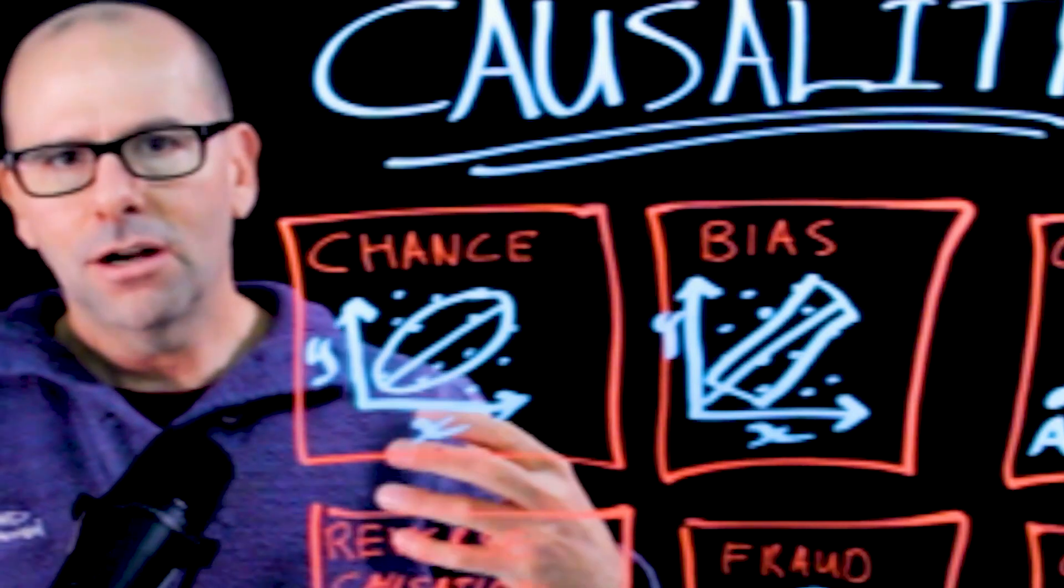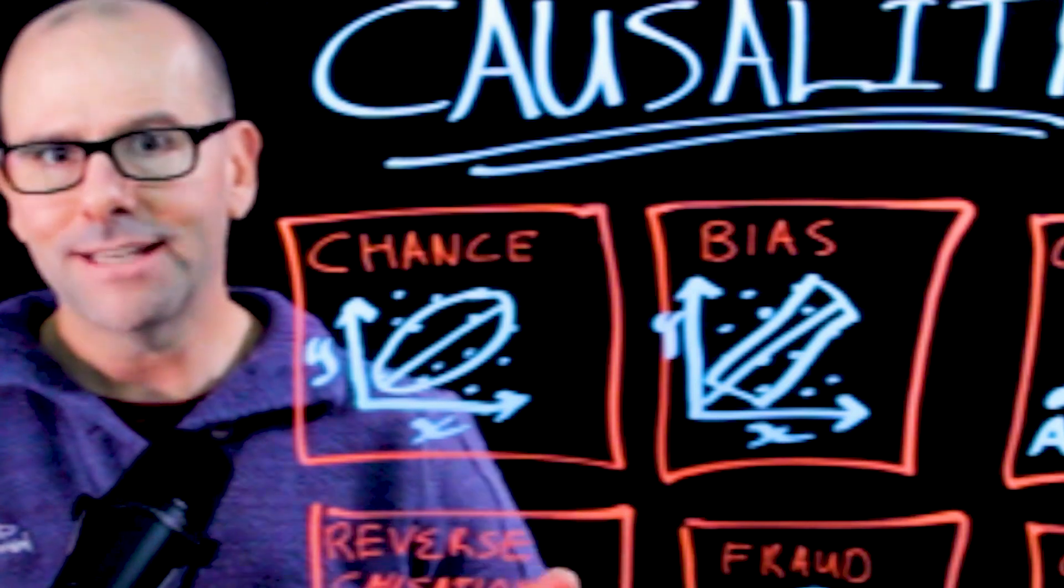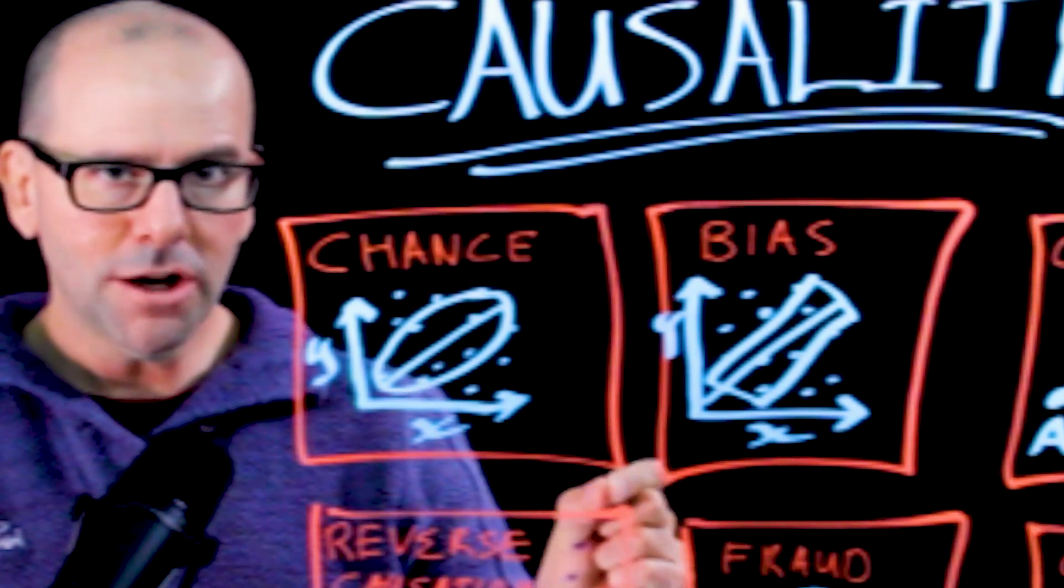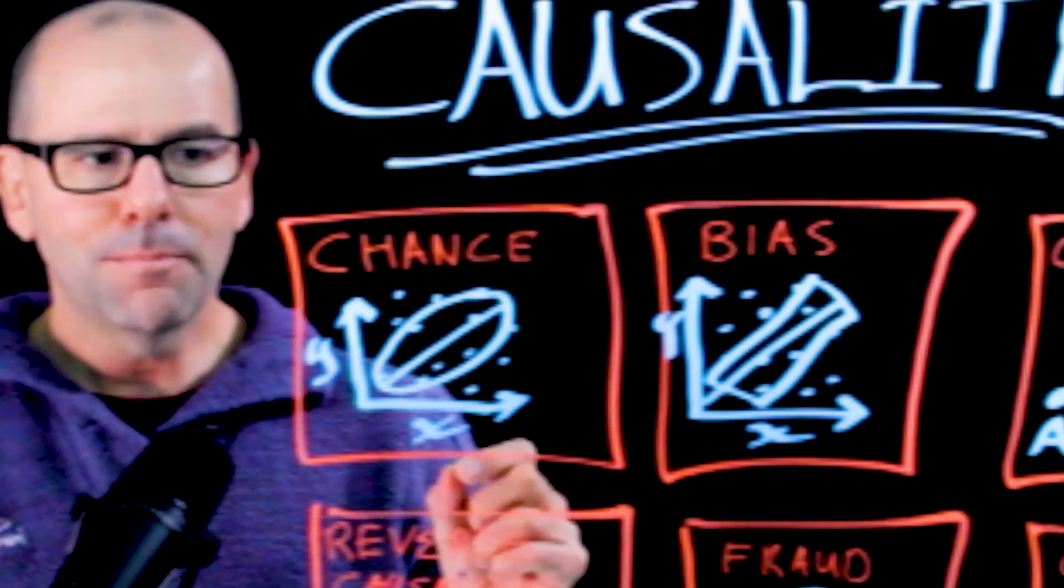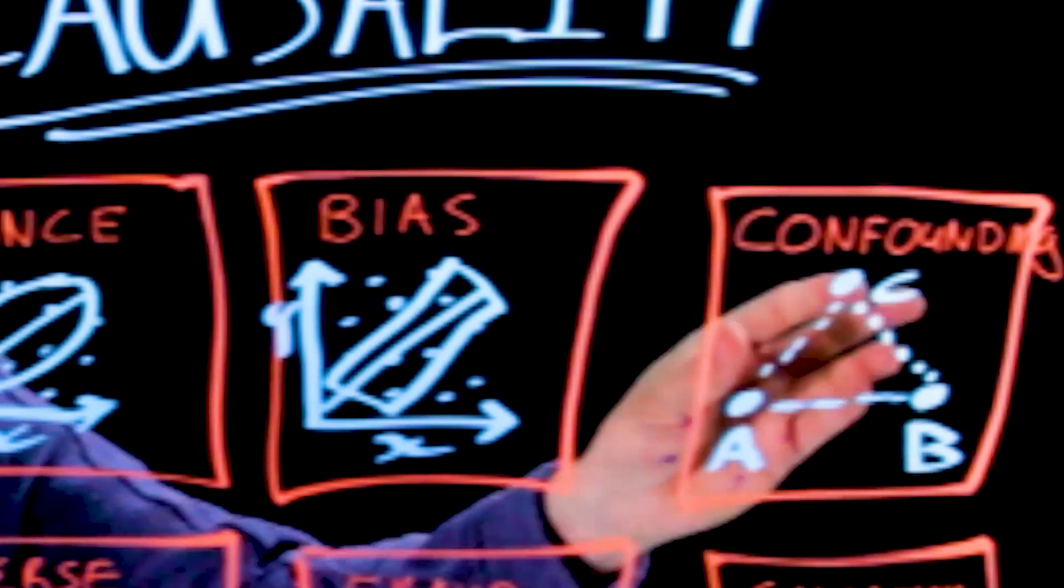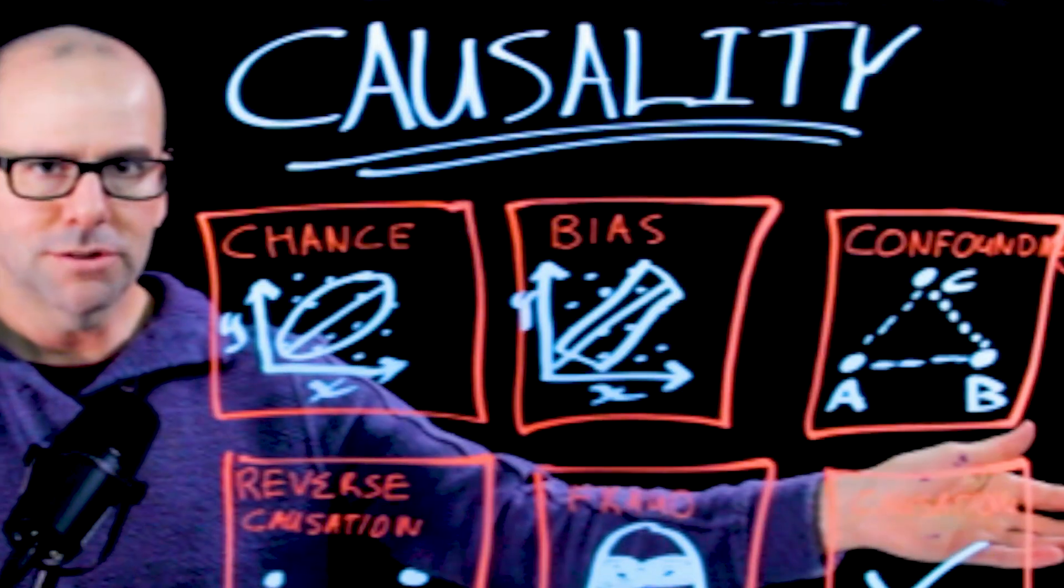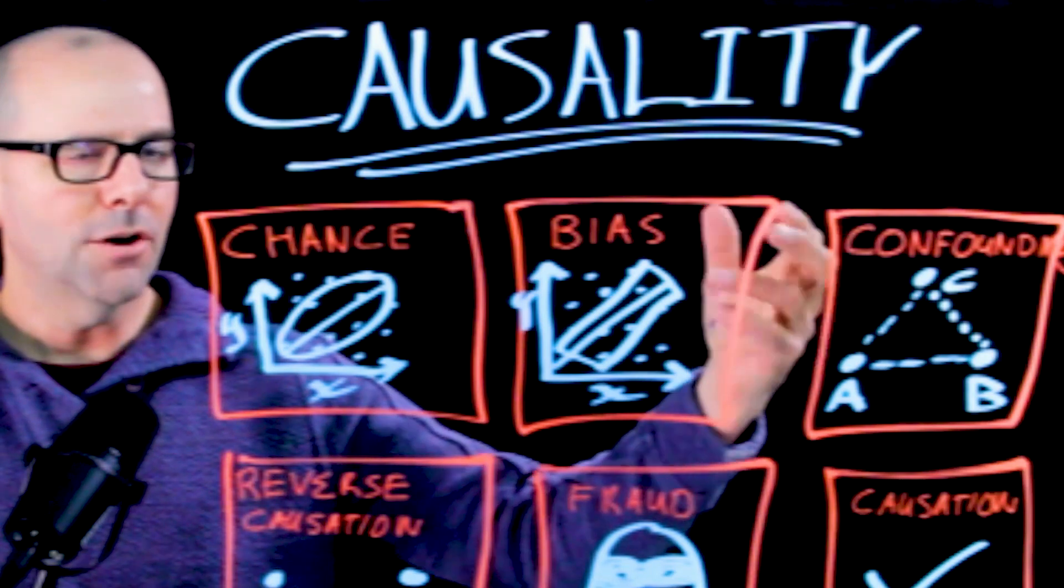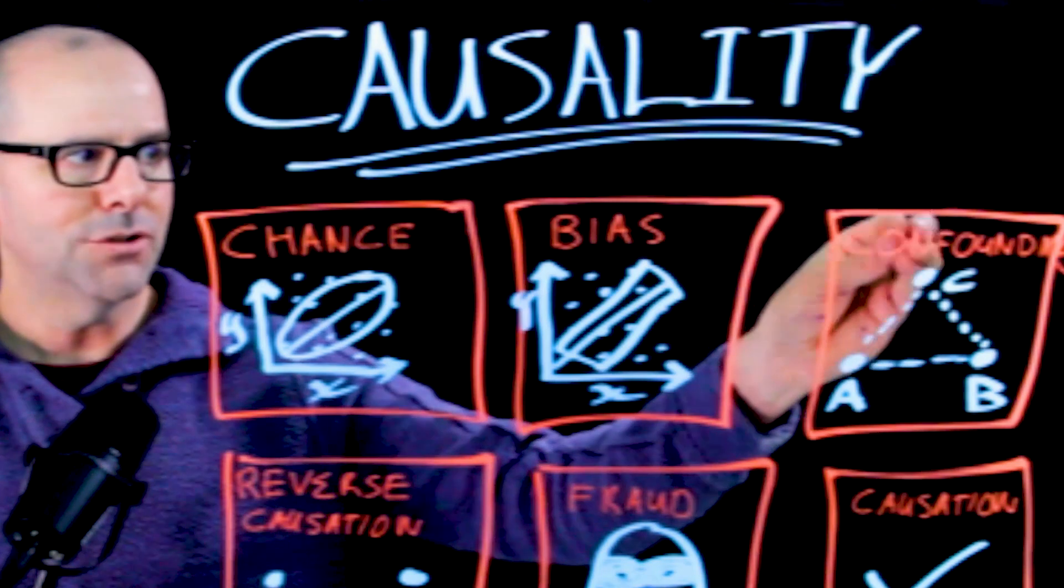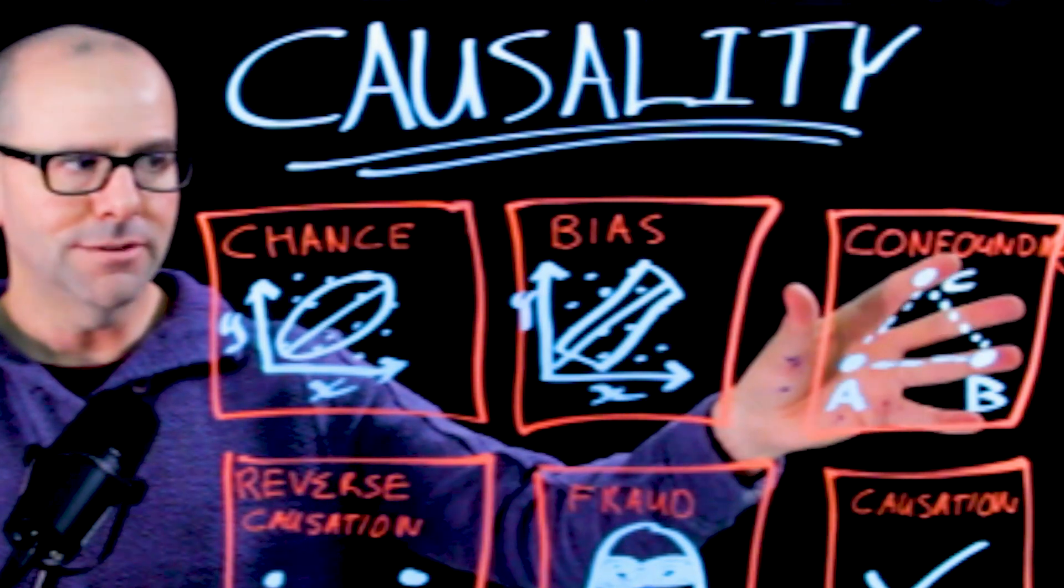Let me give you a quick example to illustrate that. The incidence of shark attacks goes up at the same time as the consumption of ice cream, right? Ice cream consumption doesn't cause shark attacks, but both of those variables, ice cream consumption and shark attacks are associated with nice hot summer days, right? People swim in the sea when it's hot, more chance of getting bitten by a shark. On a hot day, you're more likely to eat ice cream. Ice cream eating doesn't cause shark attacks. They're both associated with a third variable, which is not on the causal pathway. That's confounding.